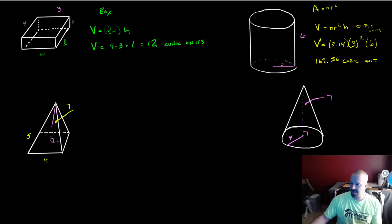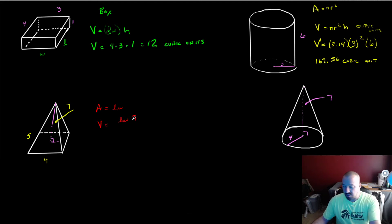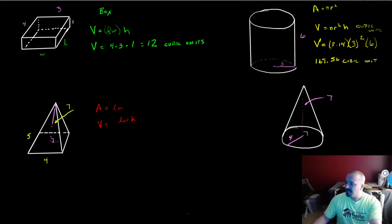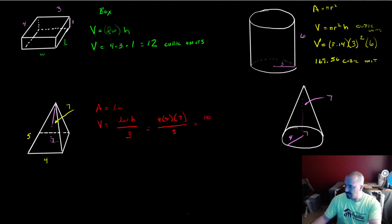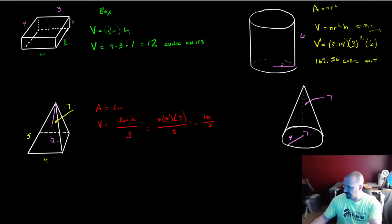Here we have a pyramid. The area of the base is just length times width, so the volume is going to be length times width times the height. But because it comes together, you divide by 3. So this is really 4 times 5 times 7, divided by 3 — that's 140 over 3, which is roughly 46.7 cubic units.